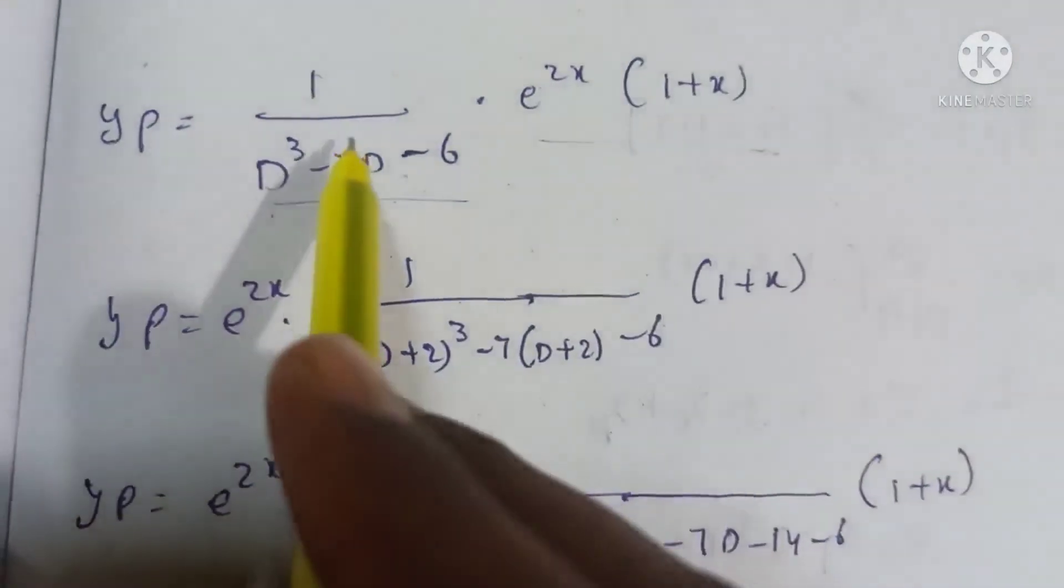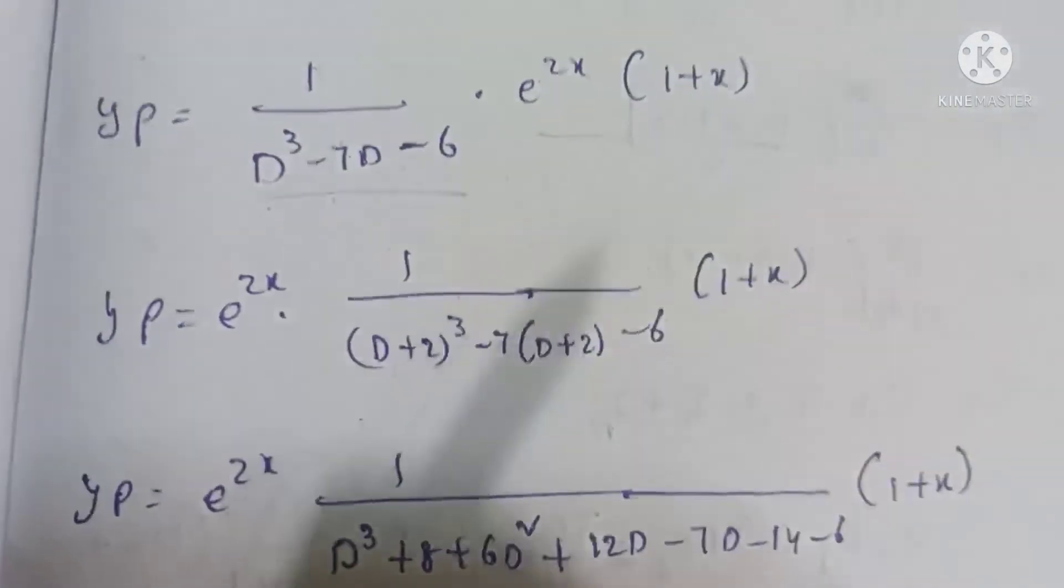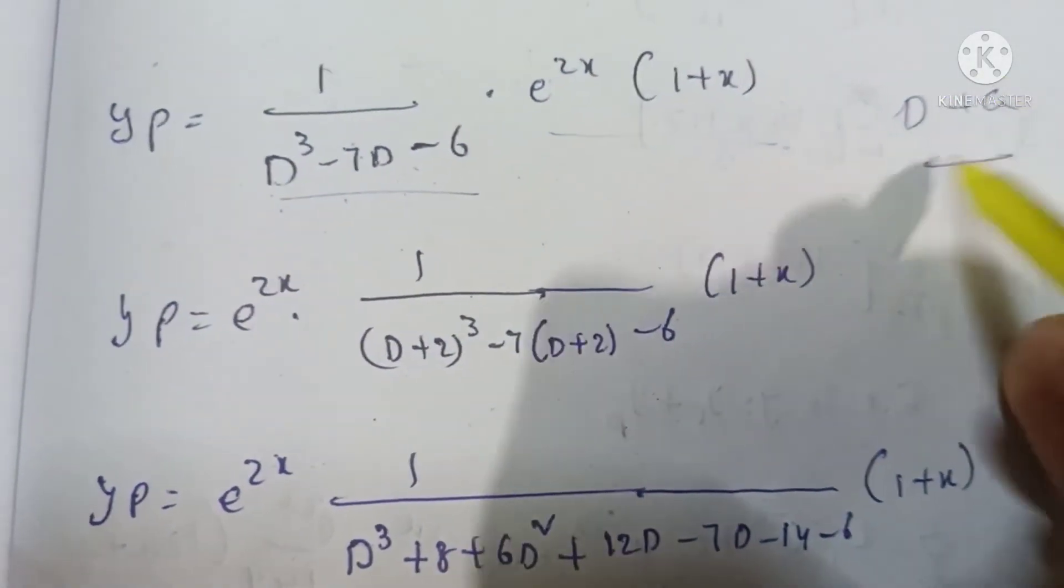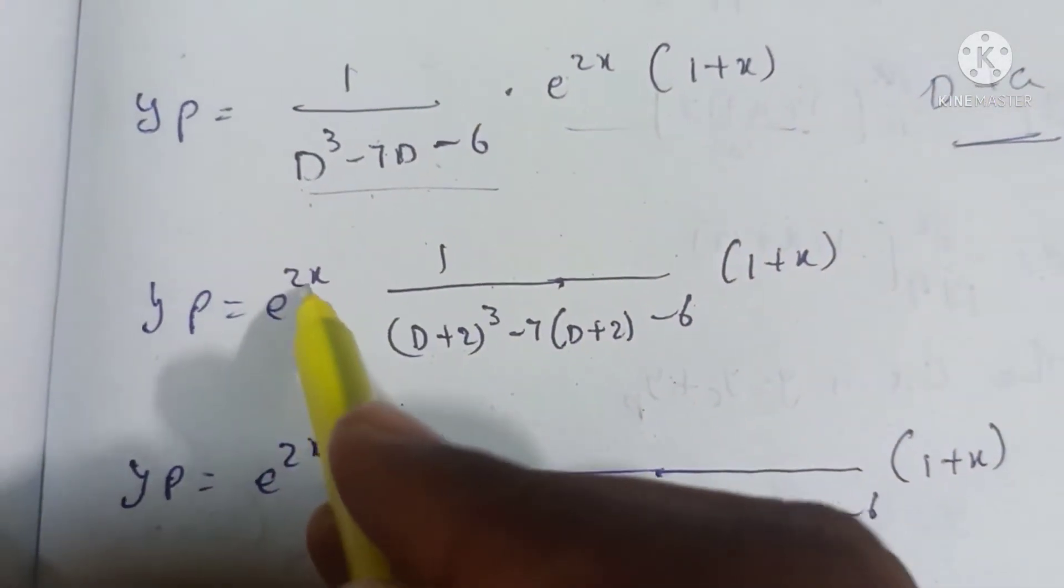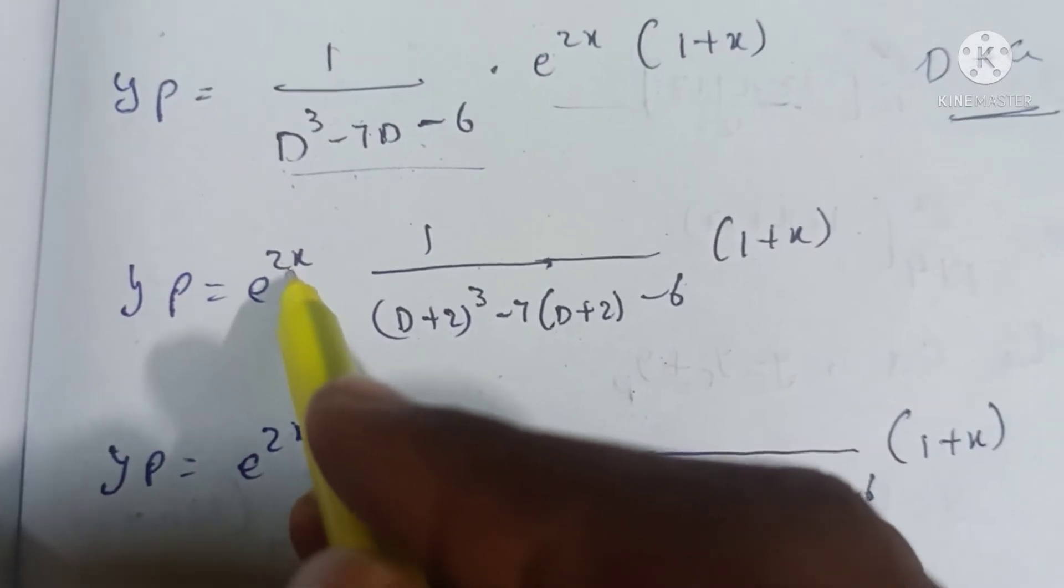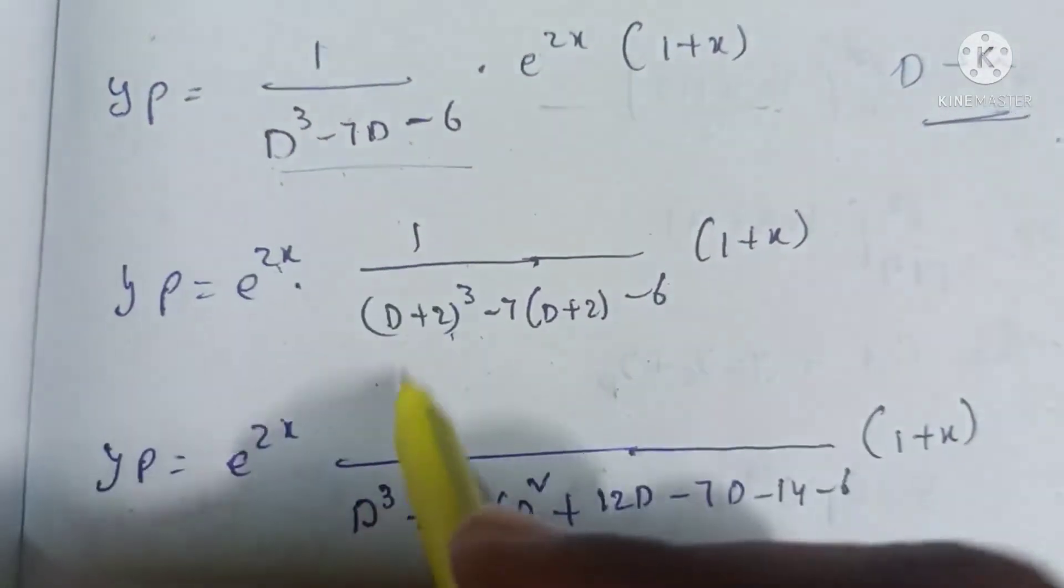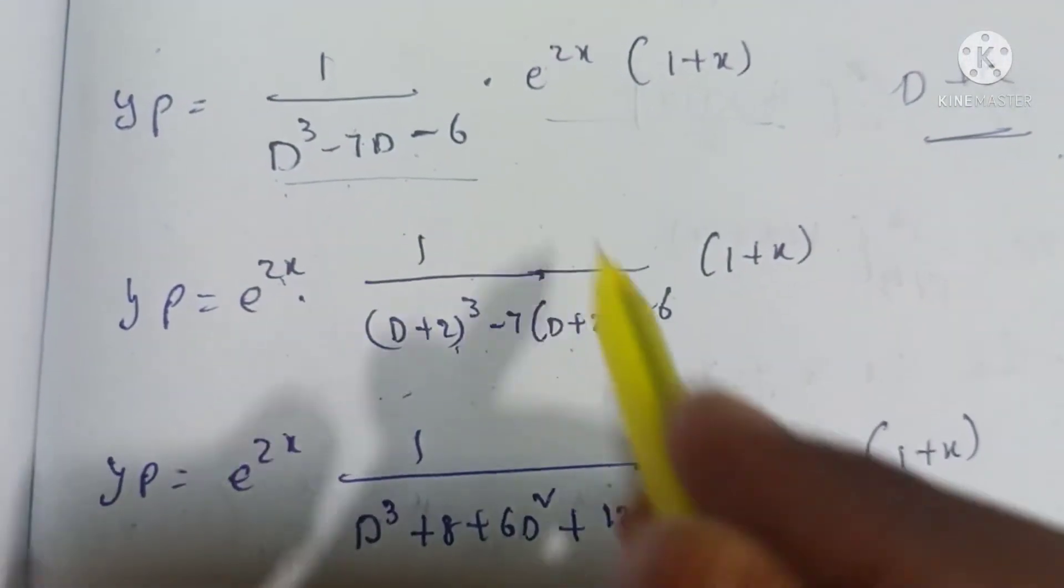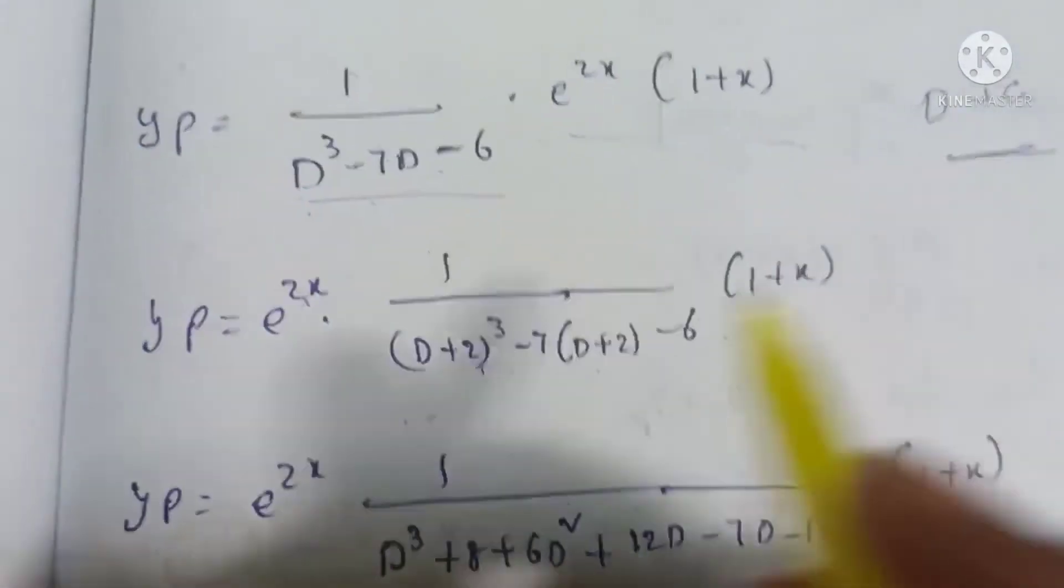For e^(2x), we use the method: substitute D + 2 in place of D. So we get e^(2x)/(D + 2)³ - 7(D + 2) - 6 × (1 + x).